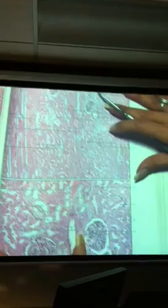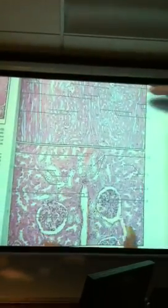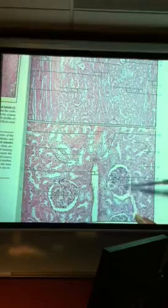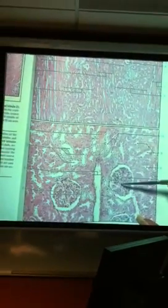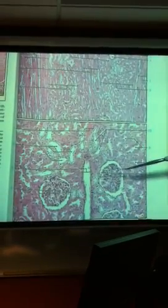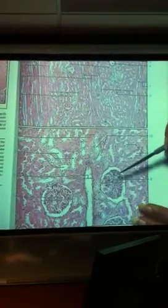Now, if you take that renal corpuscle and look at it under high magnification, this is what you see. On the inside, we see the glomerulus. Then you will see what looks like an open space. That open space is actually Bowman's capsule.